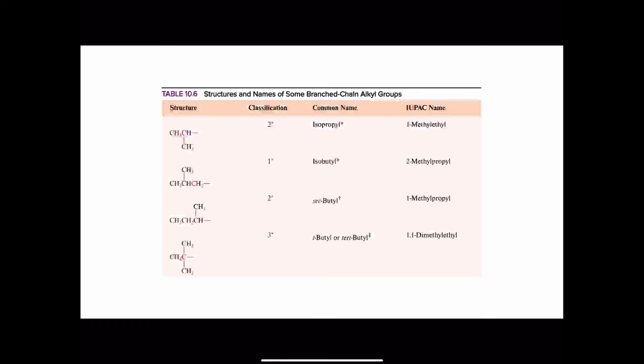You also have to memorize all of the branched-chain alkyl groups found in Table 10.6. Sometimes students might find it useful to make flashcards for these, but you're going to have to memorize isopropyl, isobutyl, secbutyl, and tbutyl or tertbutyl. There are also a couple of others that I'll teach you in the main lecture videos.